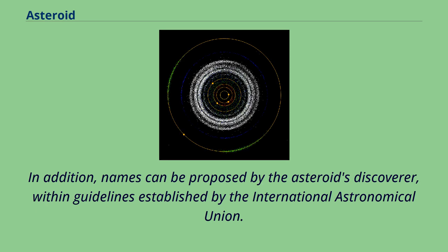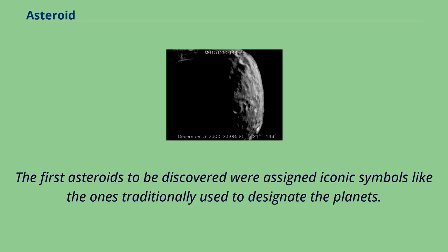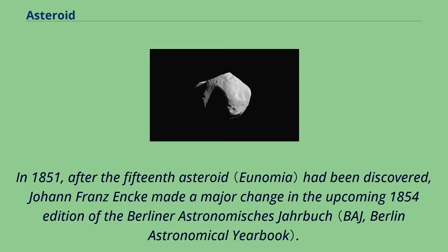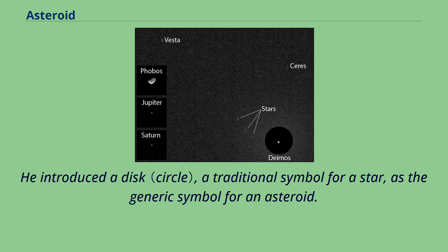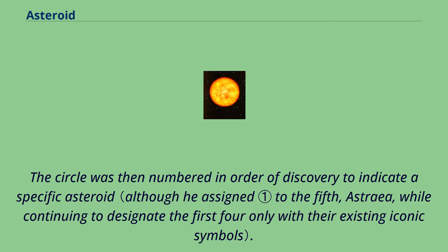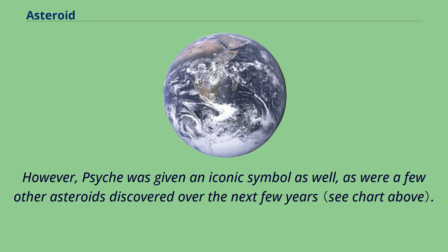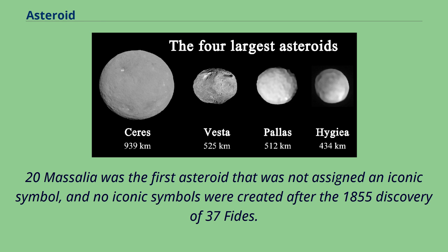Names can be proposed by the asteroid's discoverer within guidelines established by the International Astronomical Union. The first asteroids to be discovered were assigned iconic symbols like the ones traditionally used to designate the planets. By 1855 there were two dozen asteroid symbols, which often occurred in multiple variants. In 1851, after the 15th asteroid had been discovered, Johann Franz Encke made a major change in the upcoming 1854 edition of the Berliner Astronomisches Jahrbuch, introducing a disk as the generic symbol for an asteroid, with the circle numbered in order of discovery to indicate a specific asteroid. 20 Massalia was the first asteroid not assigned an iconic symbol, and no iconic symbols were created after the 1855 discovery of 37 Fides.